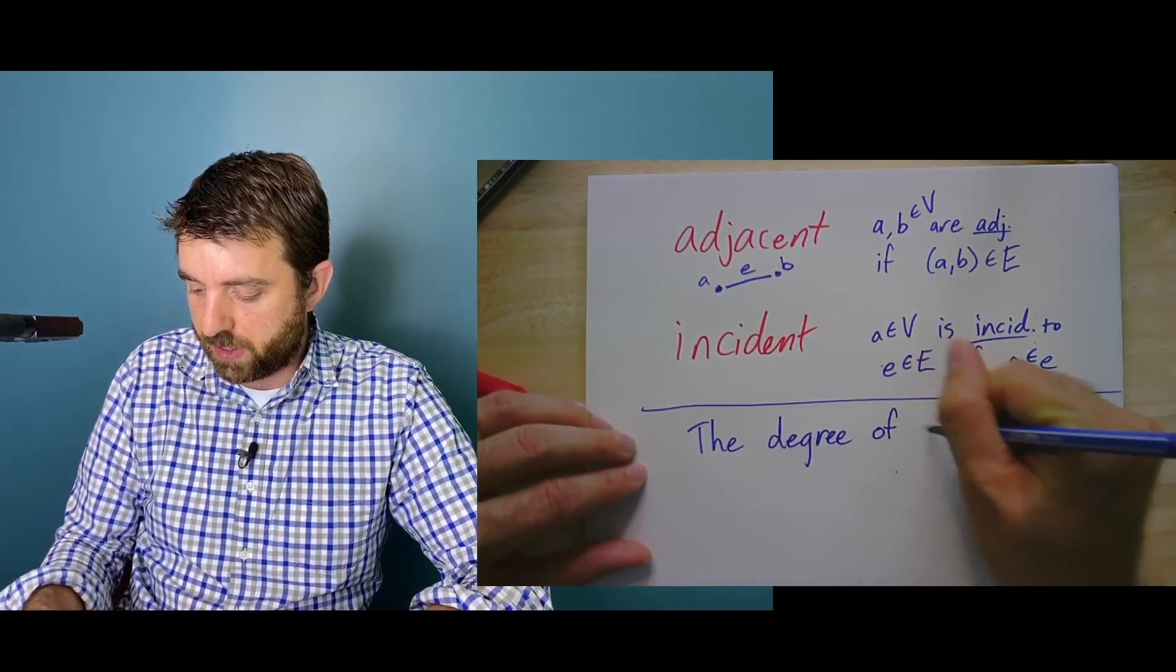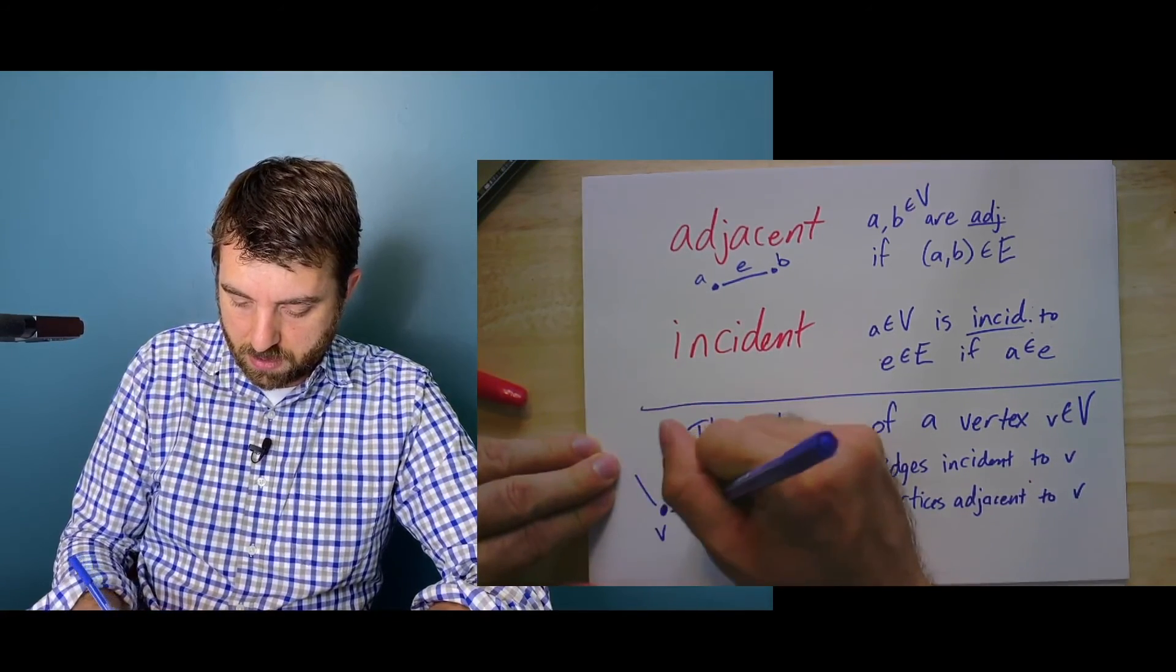Using this, we can define the degree of a vertex, one of the most fundamental properties you'll find here. The degree of a vertex V in V is the number of edges incident to it, and it's also equal to the number of vertices adjacent to V. You see in the two equivalent definitions we get to use both of these words. In pictures now, here's a vertex V. The degree of V here is four. It's got one, two, three, four edges coming out. There are four vertices adjacent to it.